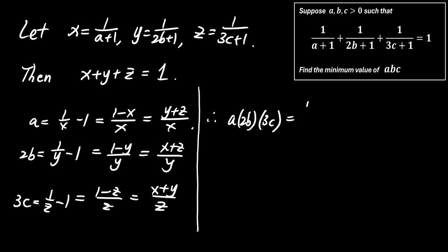We now compute a times 2B times 3C. This equals Y plus Z divided by X, times X plus Z divided by Y, times X plus Y divided by Z.